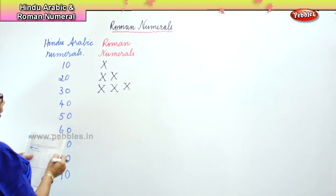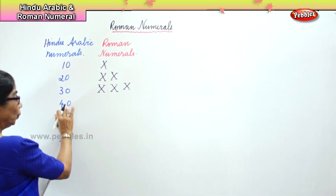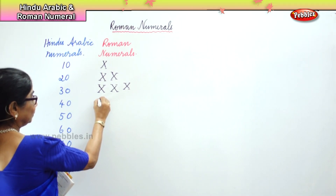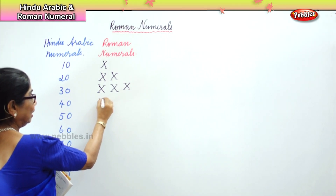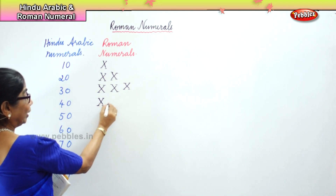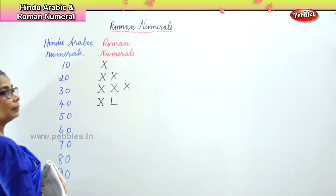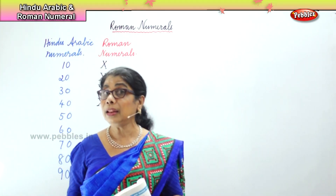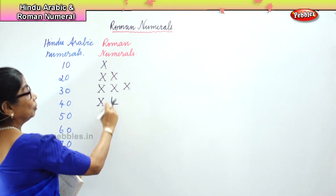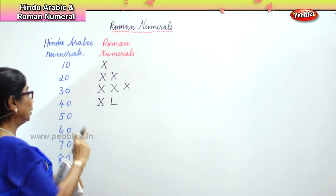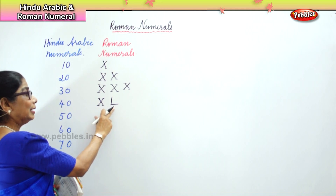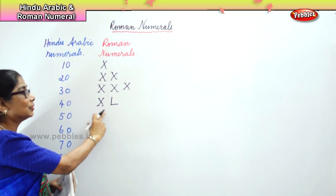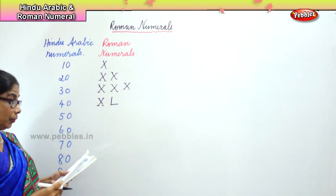When it is 40, the rule is: any numeral to the left of the greater numeral, you must always minus. Now L is, in Roman numeral, 50. To get 40: 50, because it is on the left side, minus 10. So this is 40.